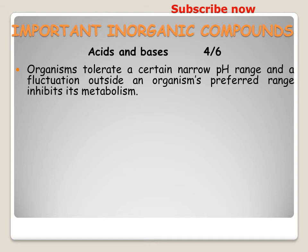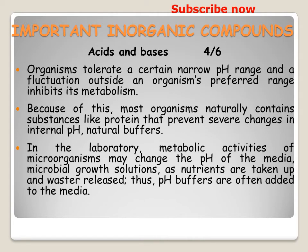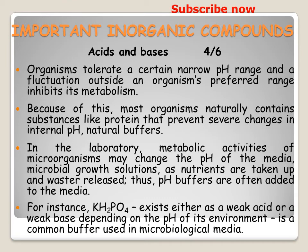Organisms tolerate only a certain narrow pH range, and fluctuation outside an organism's preferred range inhibits its metabolism. Because of this, most organisms naturally contain substances like proteins that prevent severe changes in internal pH — these are called natural buffers. In the laboratory, metabolic activities of microorganisms may change the pH of the media as nutrients are taken up and waste is released. Thus, pH buffers are often added to the media. For example, phosphoric acid exists either as a weak acid or a weak base depending on the pH of its environment, which is why it is used as a common buffer in microbiology media.